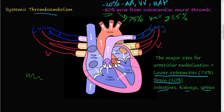Sometimes when you get a venous thrombus or embolism, it travels through the inferior or superior vena cava into the right atrium. If there is a hole in the interventricular septum or the interatrial septum, that embolism can pass right through that hole into the left side of the heart, then get shipped out into the systemic circulation and cause a systemic thromboembolism. This is called a paradoxical embolism.